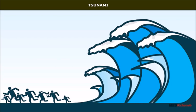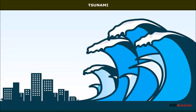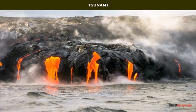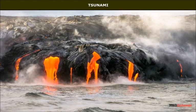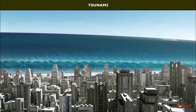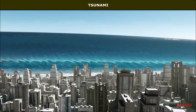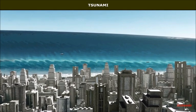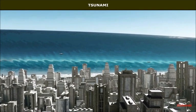Tsunami is a Japanese word meaning destructive tidal wave, but actually it is a seismic sea wave caused by an earthquake occurring on the ocean floor. It can also be triggered by volcanic eruptions. It causes a wave-like displacement of ocean water and causes great loss to life and property on the shore on account of the back action of the water which flows back to the ocean.